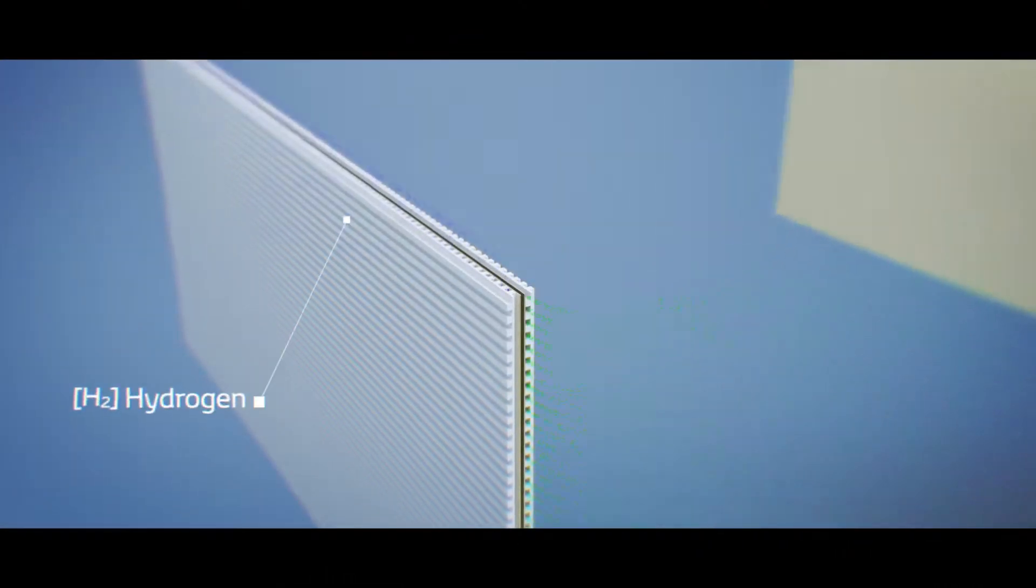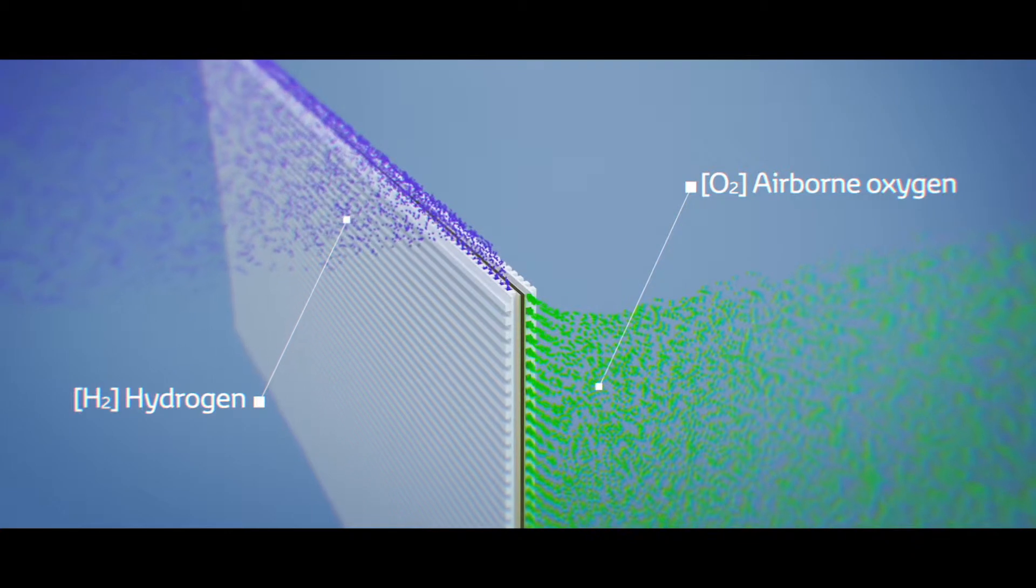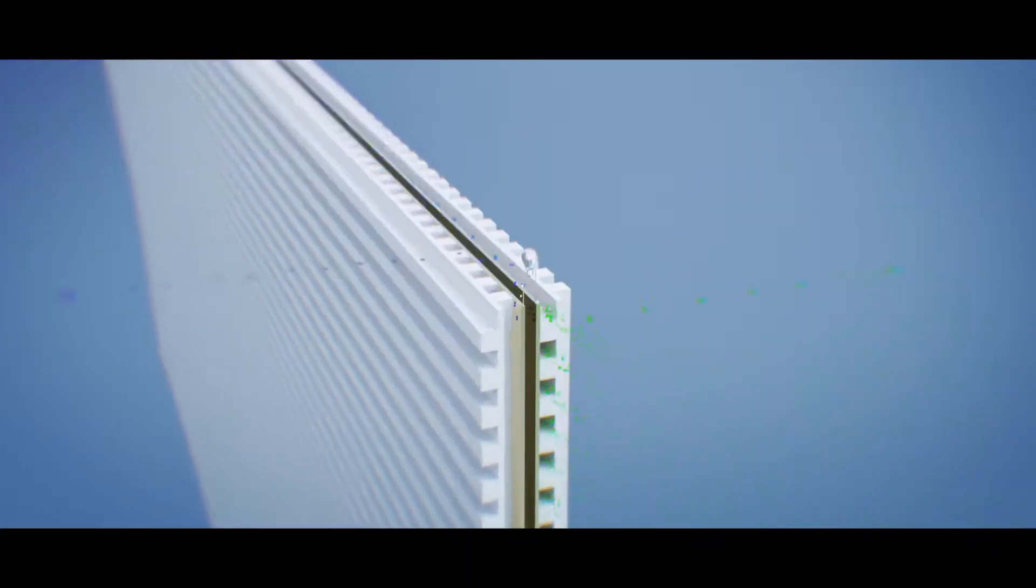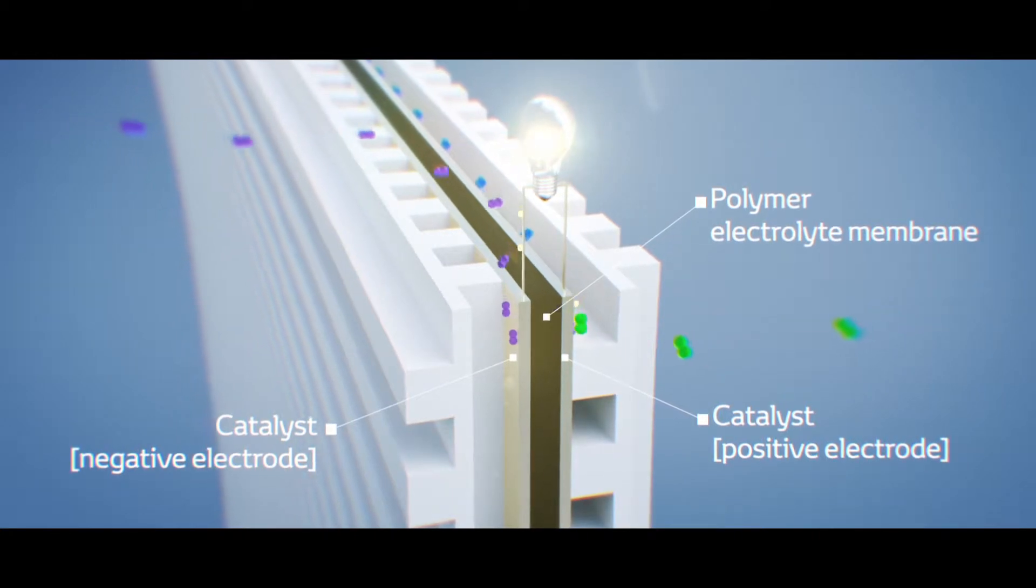This is how the electricity is generated. The car takes in oxygen from the air which meets hydrogen from the high pressure hydrogen tank in the fuel cell. Many fuel cells combine to form the fuel cell stack.